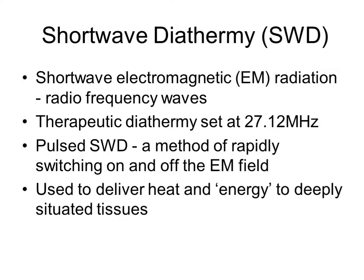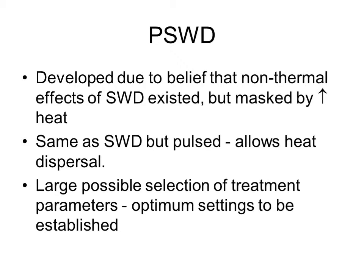Shortwave diathermy is used to deliver energy to deep tissues and may cause significant heating effects, with all of the therapeutic effects that that may bring. Pulsed shortwave diathermy was developed due to observations that some of the effects of shortwave diathermy could not be attributed simply to the effects of heating. It uses precisely the same energy, but the pulsing allows heat to be dispersed. The degree of heat dispersal depends on the pulse rate and intensity.